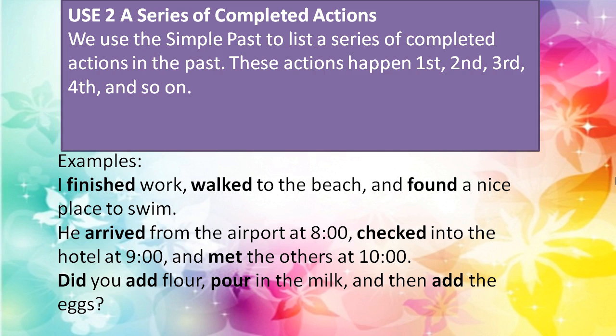We use the simple past to list a series of completed actions in the past, to order things — first, second, third, fourth. These actions happened in sequence. We don't always know what happened first. Examples: 'I finished work, walked to the beach, and found a nice place to swim.' There are three actions that finished, but we don't know what happened first — they just happened in sequence.